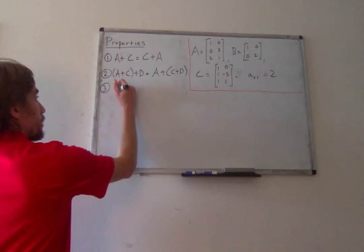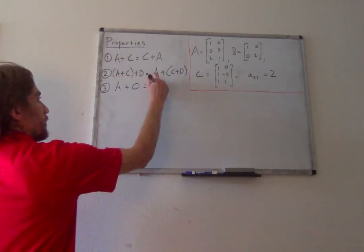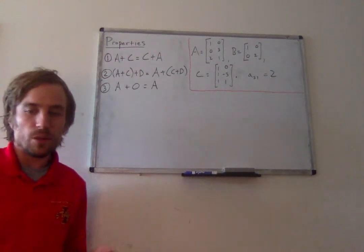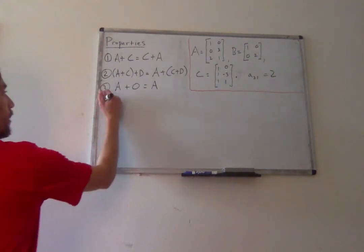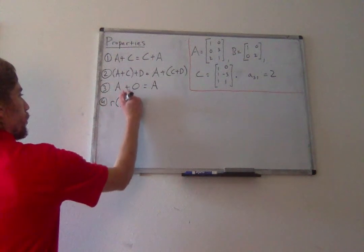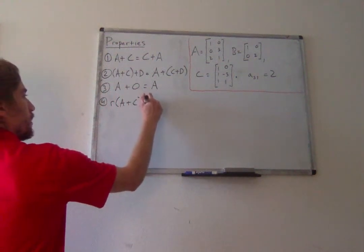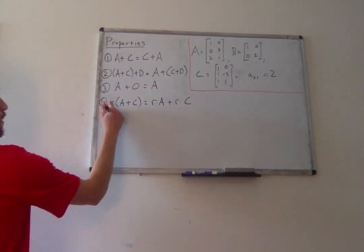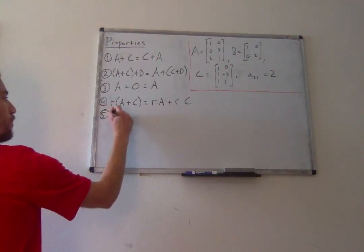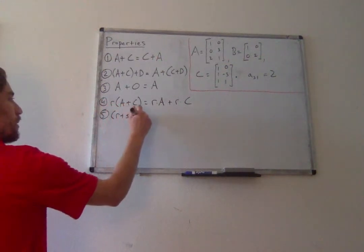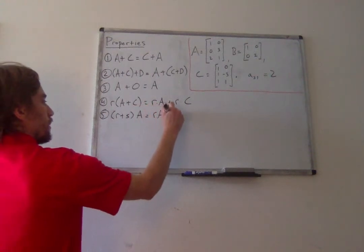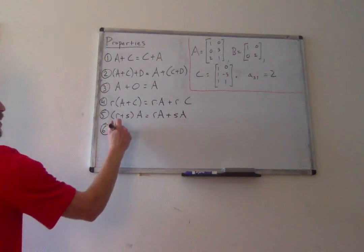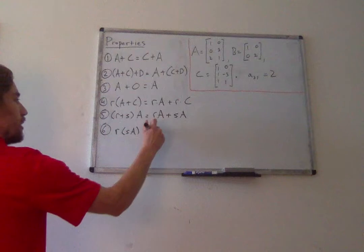A plus the zero matrix is always equal to A. Again, all properties, I think you'd kind of want to just have work anyways. Next, I can distribute scalars across matrix addition. Next, I can distribute matrices across scalar addition. And last, if I'm multiplying A by two scalars, it doesn't really matter what order I do the multiplication in.